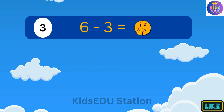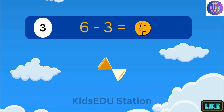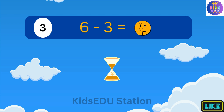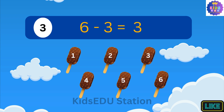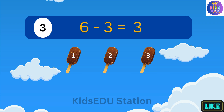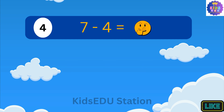What is 6 minus 3? 6 minus 3 is 3. Imagine you have 6 popsicles. You ate 3 of them. Now you have 1, 2, 3 popsicles left.